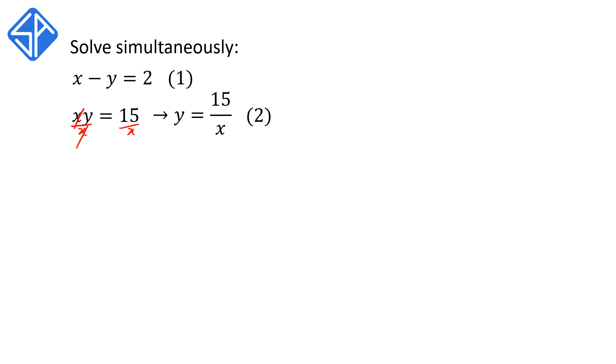And we're going to substitute equation 2 into equation 1. This means that we're going to replace the variable y in equation 1 with the expression 15 on x from equation 2. The idea behind this is that we want to get rid of one variable and replace it with another variable so that we end up with one equation with one variable which we can solve. So after we substitute 2 into 1, we'll get x minus 15 on x is equal to 2.